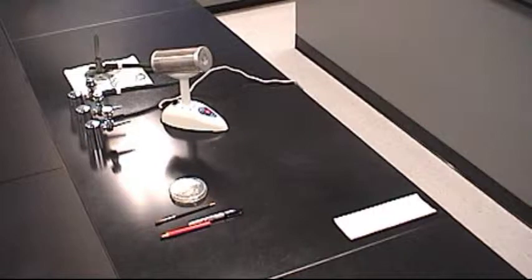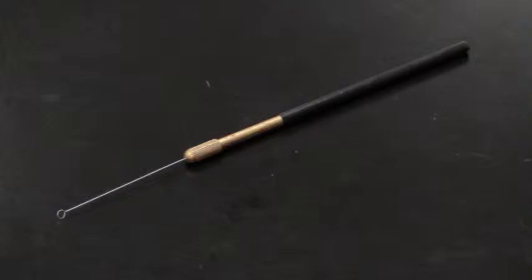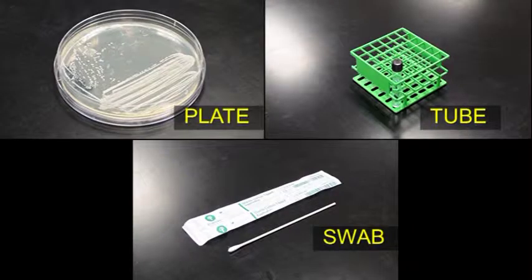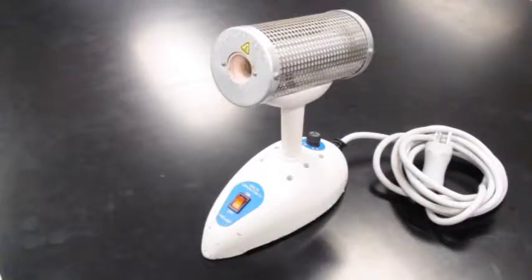To prepare a streak plate, you need a marking pen, inoculation loop, culture in either a plate, tube, or swab, plate with appropriate growth media, and bacterial incinerator.